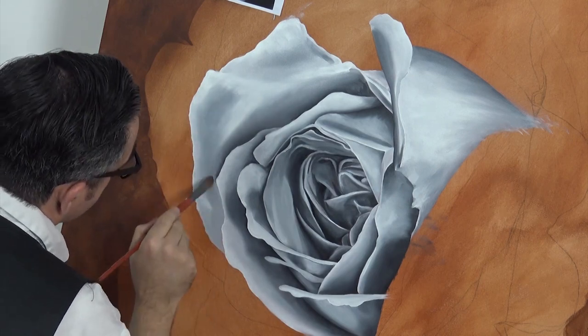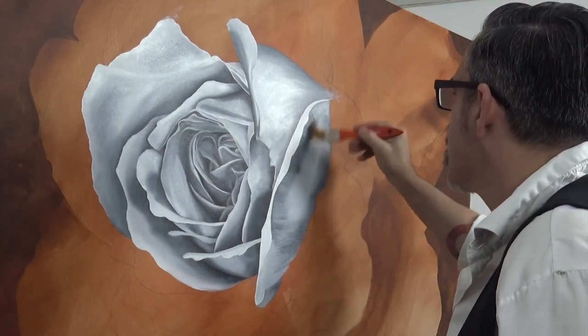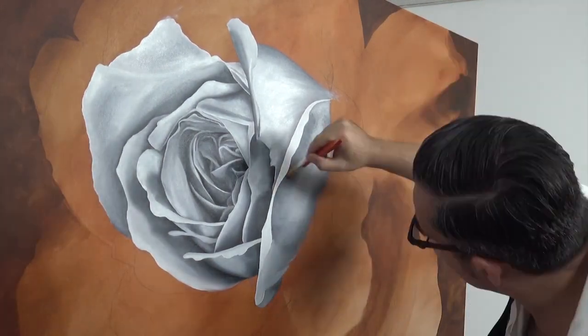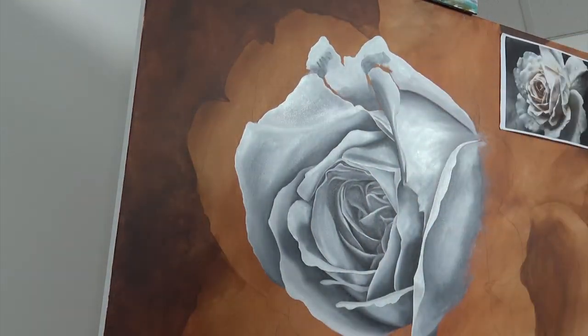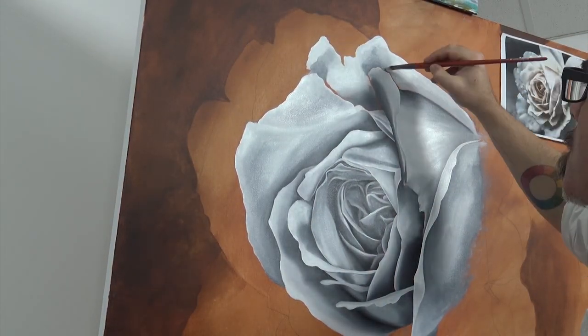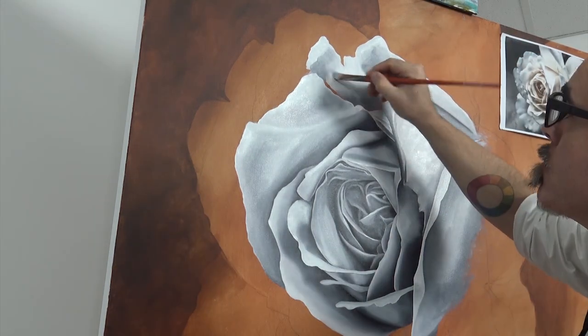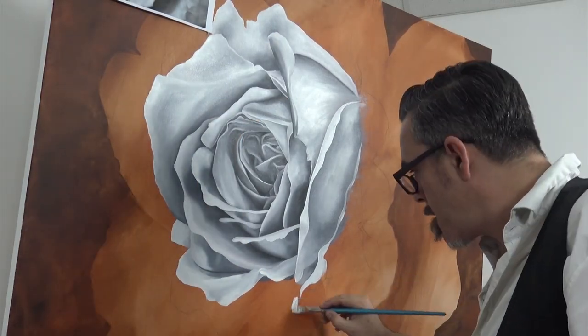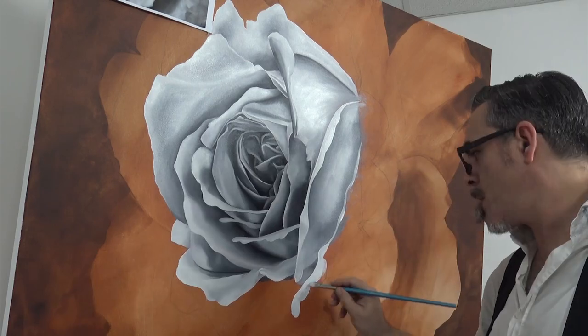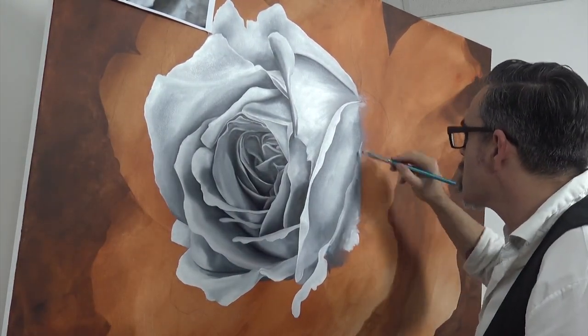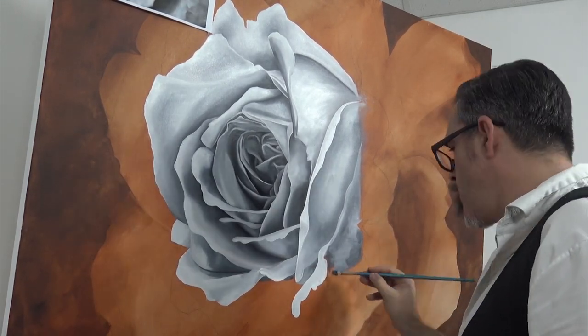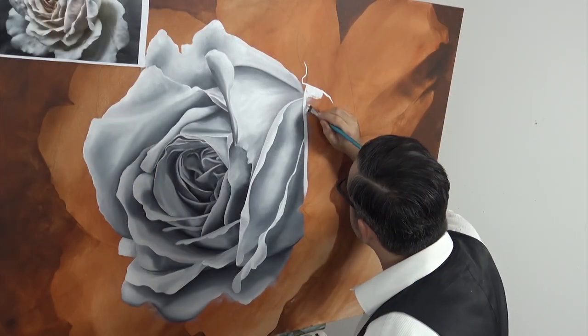Once you have the tones laid on, you can use a clean dry 50 millimeter taclon brush to smooth out all the tones. This is a really fantastic technique and it's like magic how it smooths it all out. The trick is to move the brush quickly and just lightly skim the surface. Try to follow the form of each petal with your brush strokes as well. I should also mention when doing large work it's essential to continually keep moving back to view the painting at a distance. It's the best way to see if things look right.